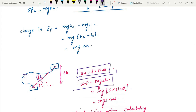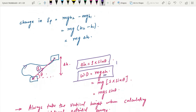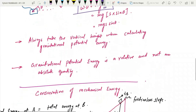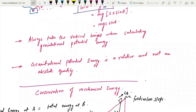Since work done equals mg delta h and gravitational potential energy uses this same formula, we can replace delta h with s sine theta. We always take the vertical height when calculating gravitational potential energy, and it is always a relative quantity, not an absolute one.